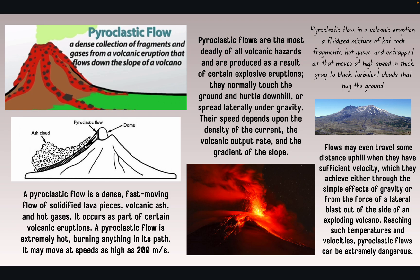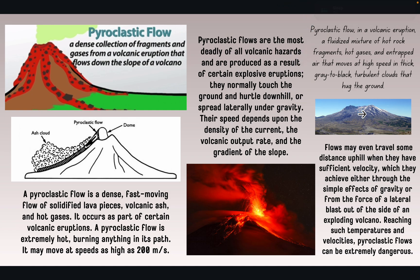Next are pyroclastic flows. It's a dense collection of fragments and gases from a volcanic eruption that flows down the slope of a volcano — fast moving. A pyroclastic flow is extremely hot, burning anything in its path, and is one of the most deadly volcanic hazards, produced as a result of certain explosive eruptions. They normally touch the ground and hurtle downhill or spread laterally under gravity. It's really important to know that they are fluidized mixtures.